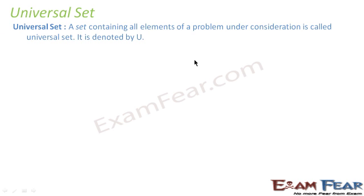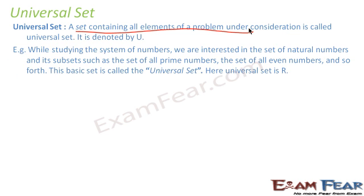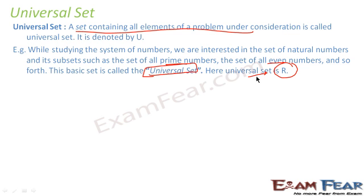Now let me introduce a new term called universal set. A universal set is a set containing all the elements of a problem under consideration, and it is denoted by U. For example, when we are studying the number system, the universal set is R — all real numbers — and subsets can be all prime numbers, even numbers, or odd numbers.